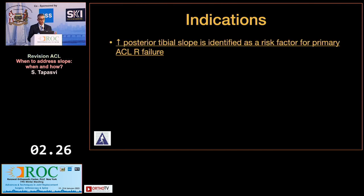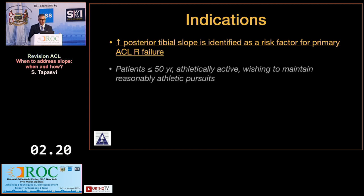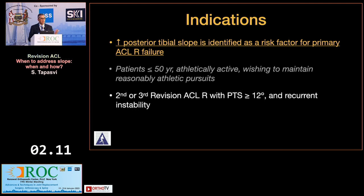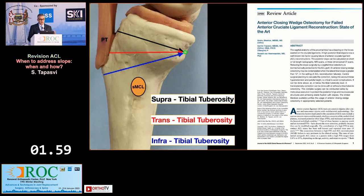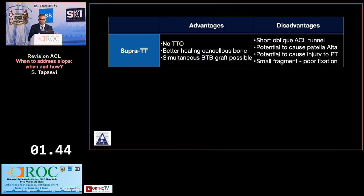Indications for slope correction include a patient with high tibial slope identified as a risk factor, who is less than 50, athletically active, and wants to maintain reasonable athletic pursuits. It is indicated for first or second revision ACL, and in unusual situations where the slope is more than 15 degrees it can be considered for primary ACL as well. There are three surgical approaches: above the tibial tubercle, through a trans-tibial tubercle osteotomy, or infratubal tubercle, each with advantages and disadvantages — we've written about this recently in the journal of the AAOS.